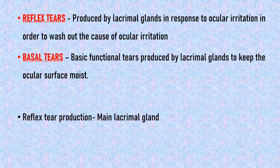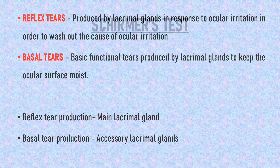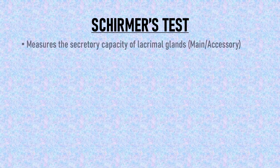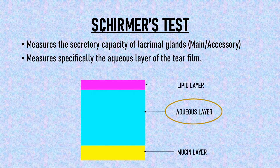The main lacrimal gland is responsible for reflex tearing, while the accessory lacrimal glands produce basal tears. Schirmer's test measures the secretory capacity of the lacrimal glands — specifically how much tear is secreted by the glands, not just how much tear fluid is produced. Sometimes tear production may be normal, but tears don't get secreted if the ducts are blocked or stenosed. Since it represents the secretory function of the lacrimal glands, it specifically measures the aqueous layer of the tear film.